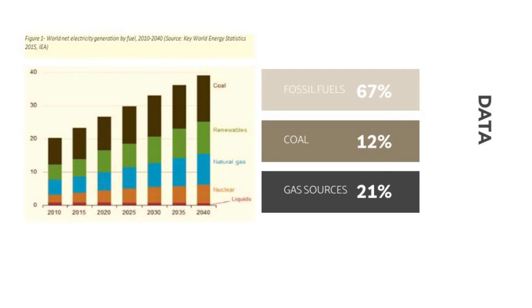This is figure 1, world net electricity generated by fuel 2010 until 2040. We can see the data: fossil fuel 67%, coal 12%, gas resource 21%.